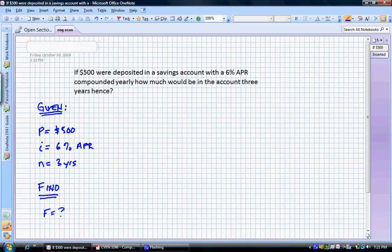Step number three, let's draw a cash flow diagram for this problem. Remember, we start out with a straight line. And we are going to have time zero, time one, time two, time three. Remember, that's three years.